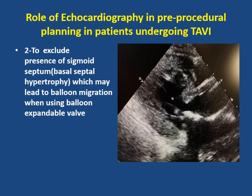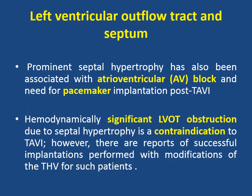The second role is to exclude the presence of sigmoid septum or basal septal hypertrophy, which may lead to balloon migration when using the balloon-expandable valve. Prominent septal hypertrophy has also been associated with AV block and the need for permanent pacemaker implantation post-TAVI. Hemodynamically significant LVOT obstruction due to septal hypertrophy is a contraindication to TAVI.